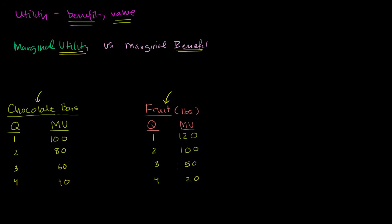With just the information given here, there are a few things you could say: my first pound of fruit I enjoy twenty percent more than my first chocolate bar; my second pound of fruit I derive about the same value as my first chocolate bar; and my second chocolate bar I enjoy twenty percent less than my first. But this still doesn't give you a lot of information about how you would actually spend your money. You might ask: wouldn't you just buy fruit over chocolate bars? Well, it depends on how much that fruit actually costs. Looking at this alone, we can only make relative judgements about preferences — it doesn't tell us how we would spend our actual money.